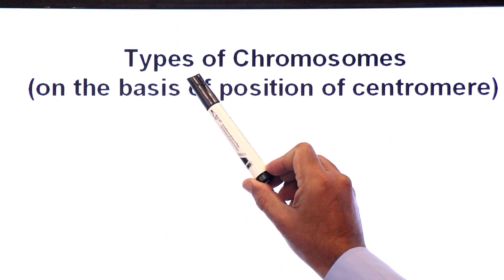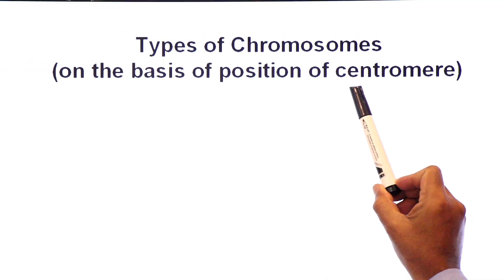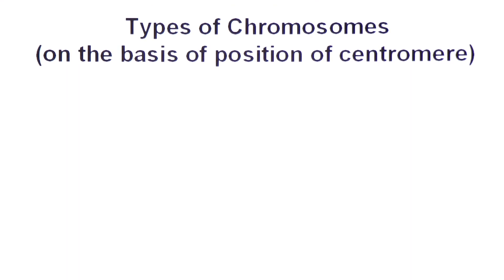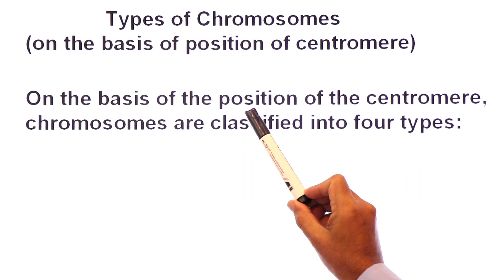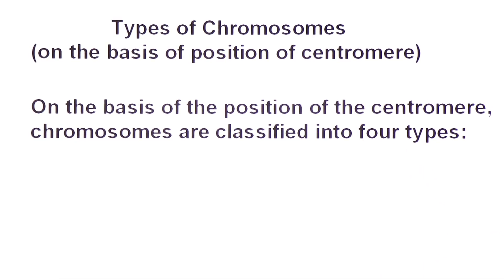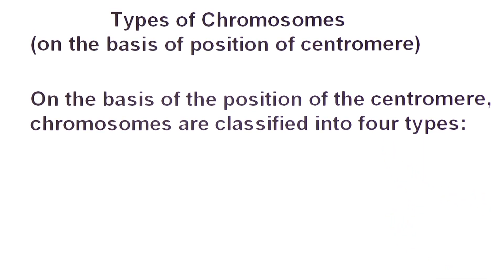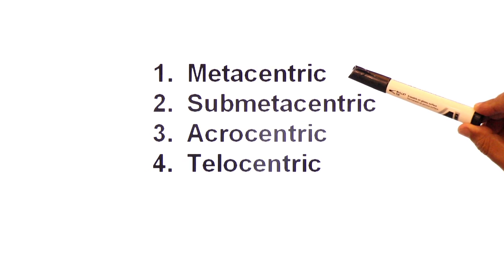Welcome back, dear students of first-year biology. Today we will discuss the types of chromosomes based on the position of the centromere. On the basis of the position of the centromere, chromosomes are classified into four types.